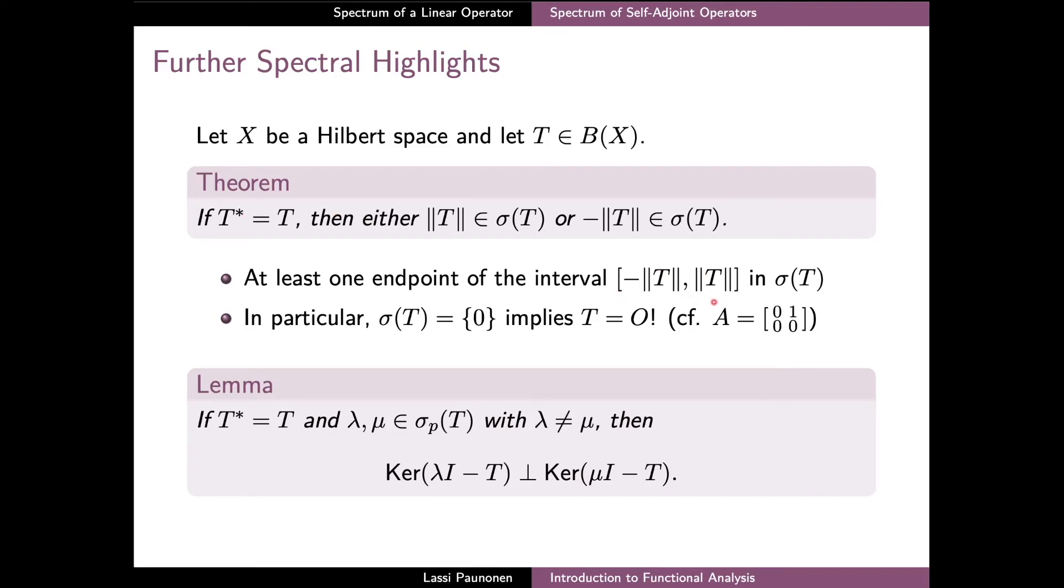We already saw that the spectrum of a self-adjoint operator is contained in the interval from minus the norm of T to norm of T. The first result here shows that at least one of the endpoints of the interval belongs to the spectrum of the operator T.